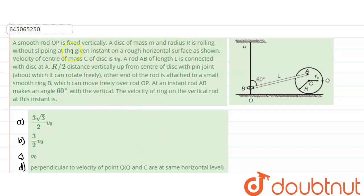Now a disk of mass m and radius R is rolling without slipping at the given instant on a rough horizontal surface as shown in the figure. The velocity of the center of mass is given to be v₀.